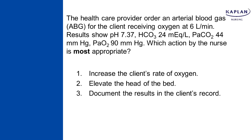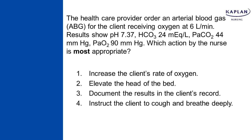Number three: document the results in the client's record. Yes, you would do that if the ABGs are normal. Number four: instruct the client to cough and deep breathe — that's similar to number two, thinking 'can't hurt anything.' But what is the most appropriate action for a client with okay ABGs? There's no reason to increase oxygen, elevate the head of the bed, or instruct coughing and deep breathing. The correct response is to document the results in the client's record.